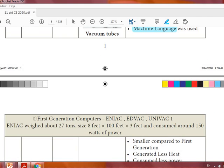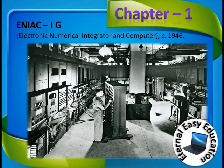Examples of first generation computers include ENIAC, EDVAC, and UNIVAC. The weight was 27 tons and the size was 8 feet × 100 feet × 3 feet — more than a room. The first generation computer ENIAC (Electronic Numerical Integrated and Computer), built in 1946, occupied an entire room.